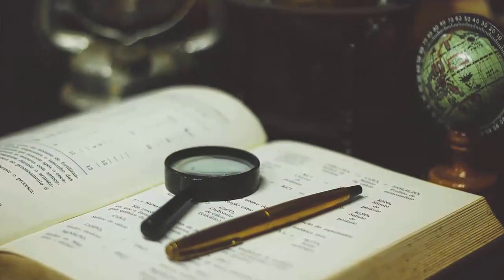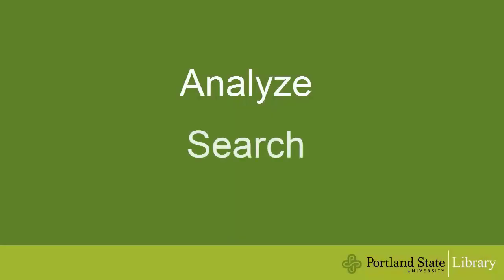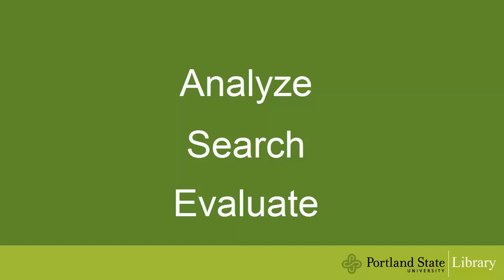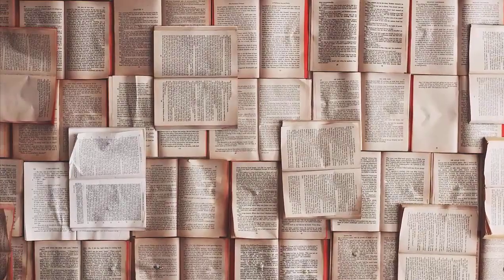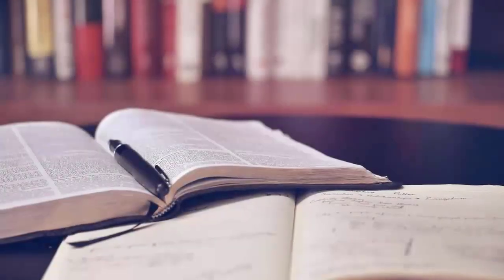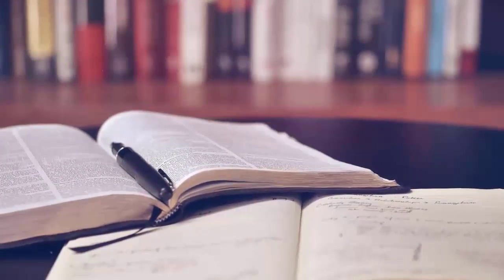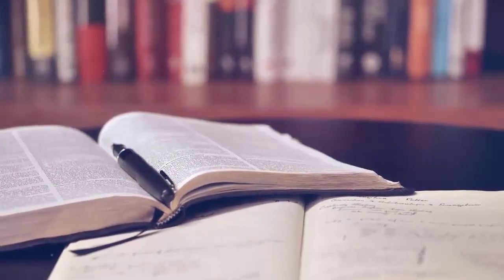So you've been given a research assignment, now what? Good research stems from analyzing your chosen topic, searching for relevant sources such as books or scholarly articles, and evaluating those sources to determine whether or not they can be used to bolster your argument or answer your question. Thinking less about how many sources you need and more about what you might do with your sources can help you write a paper in which you contribute to scholarly dialogue about your chosen topic.